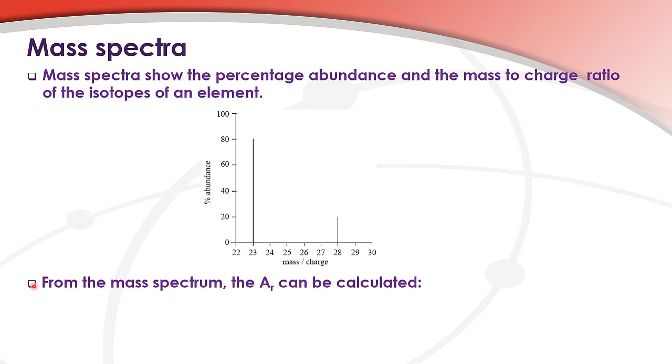From the mass spectrum, the relative atomic mass can be calculated. Here we have the equation: the relative atomic mass equals the mass to charge ratio of the isotope times its percentage abundance, plus the mass to charge ratio of the other isotope times its percentage abundance, divided by 100. Here we have the relative atomic mass of 24.